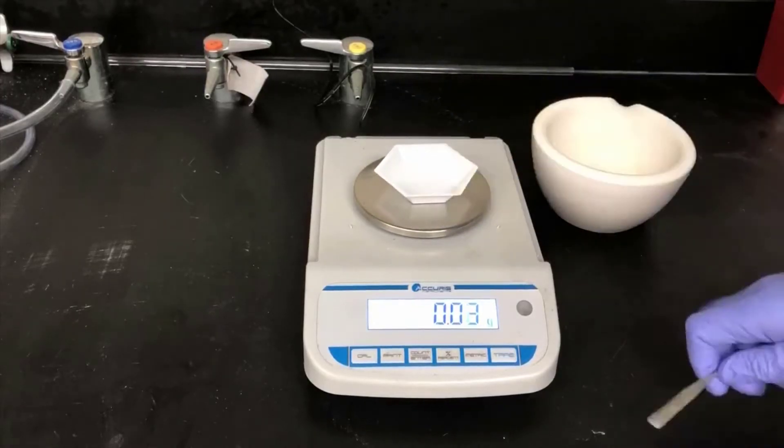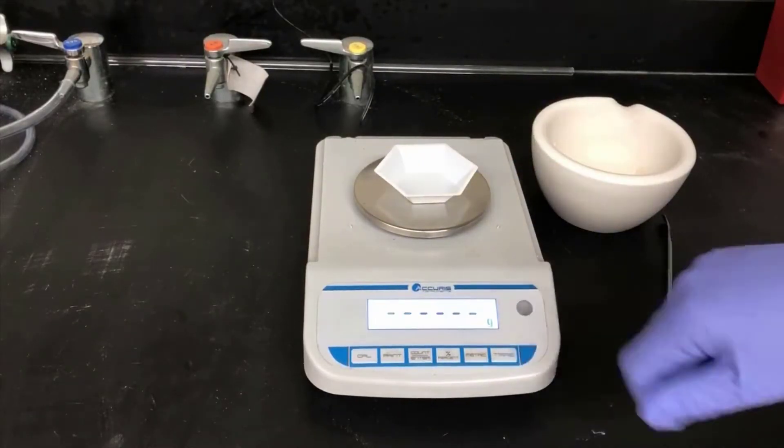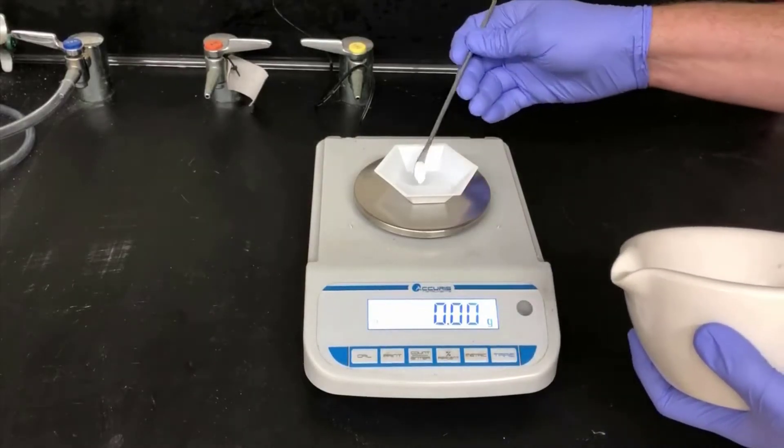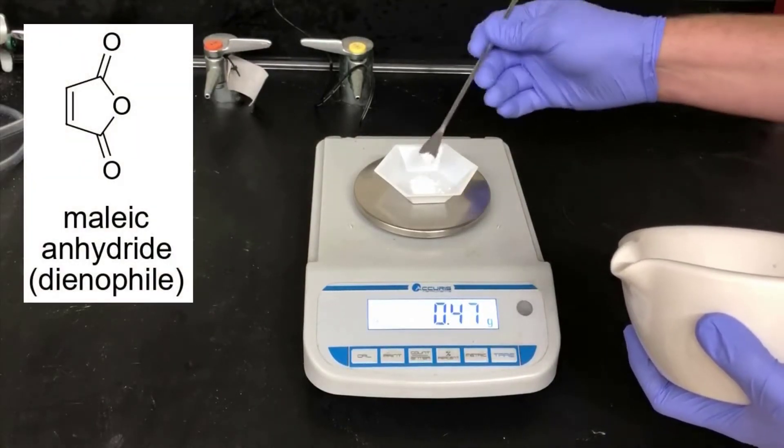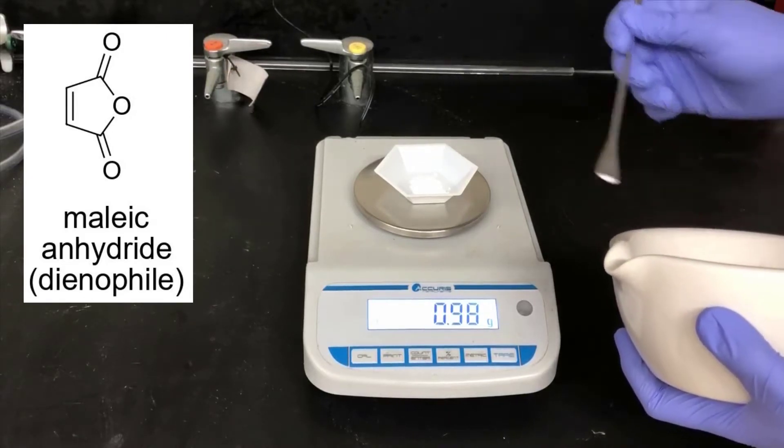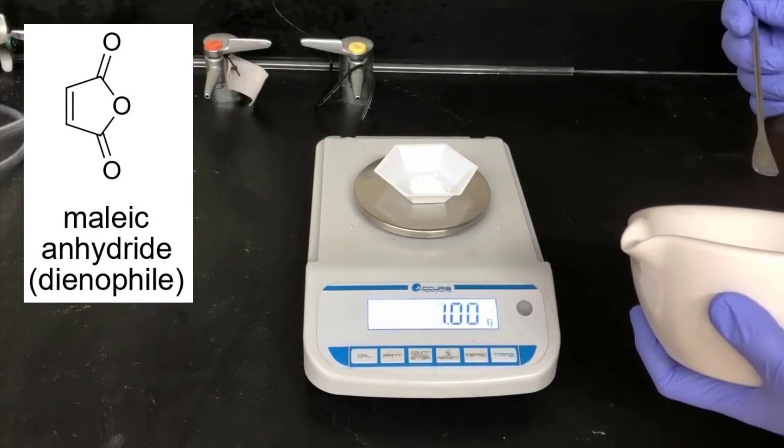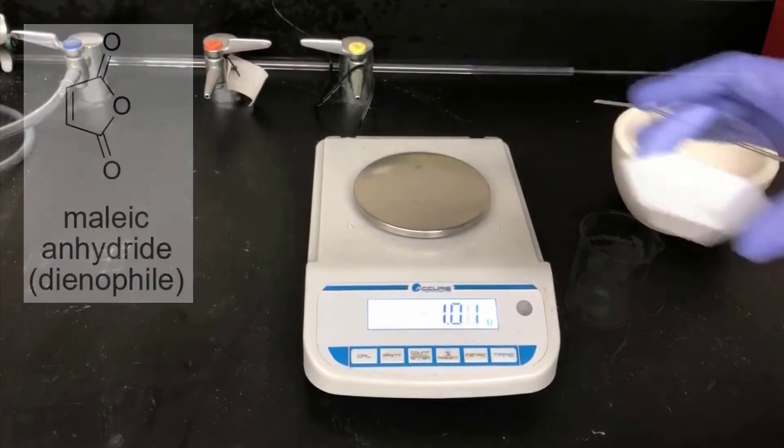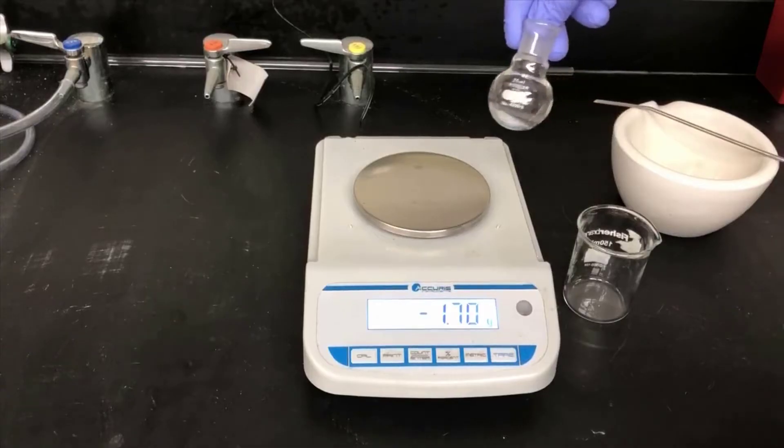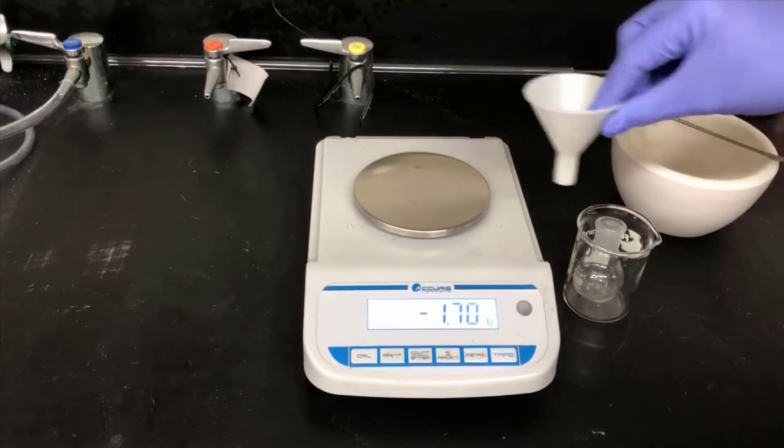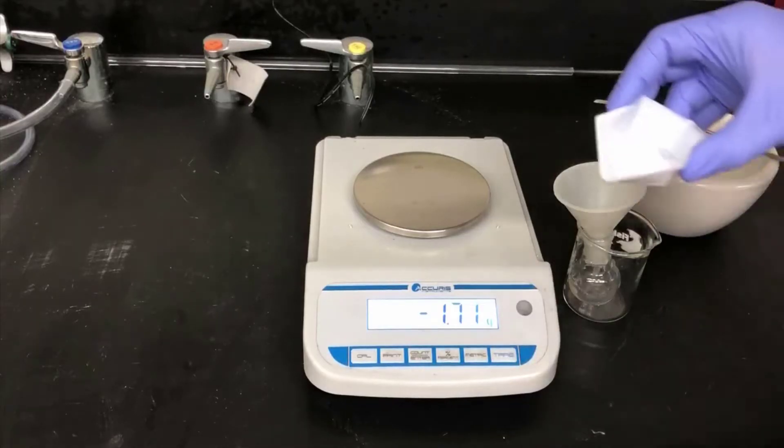Here I'm putting a weighing boat on the balance and I'll zero it by pressing the tare button. Then I'm going to dispense one gram of this material. Here's the structure of maleic anhydride. It will function as the dienophile in today's experiment, reacting with a diene in a Diels-Alder reaction. The reaction vessel in today's experiment is going to be a 25 milliliter round bottom flask. I'm going to put the maleic anhydride into this flask using a powder funnel.